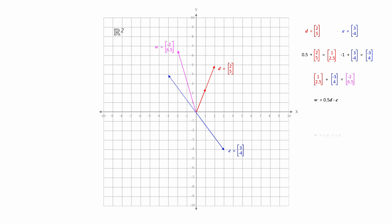In general terms, a linear combination of two vectors can be written like this, where v1 and v2 are vectors, and s1 and s2 are scalar coefficients.